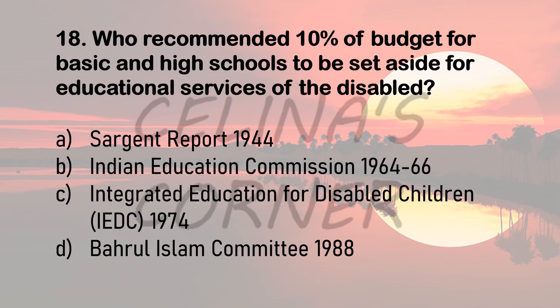Question 18. Who recommended 10% of the budget for basic and high schools to be set aside for educational services of the disabled? Option A: Sargent Report 1944. Option B: Indian Education Commission 1964 to 66. Option C: Integrated Education for Disabled Children, IEDC of 1974. Or option D: Barul Islam Committee 1988. The correct answer is option A, the Sargent Report. In this report, 10% of basic and high school funds should be set aside for educational services of the disabled, and all provisions made for disabled people should become an essential part of the national system of education, administered by the education department.